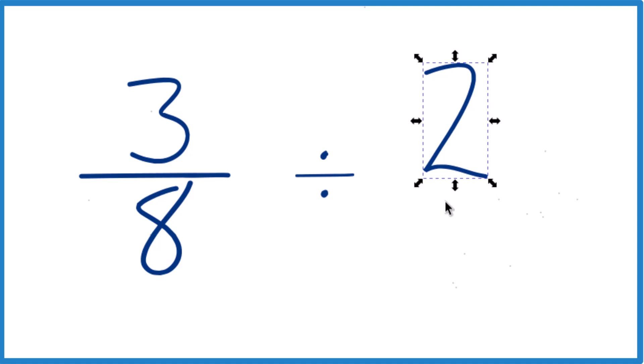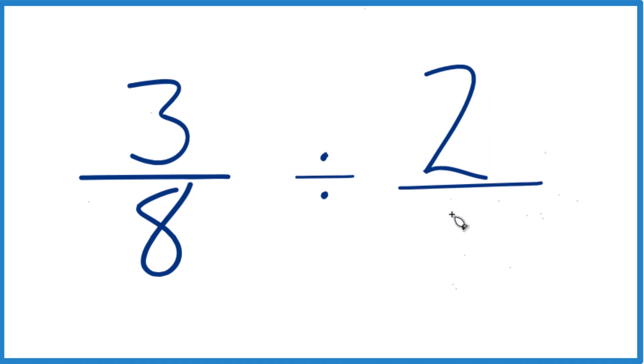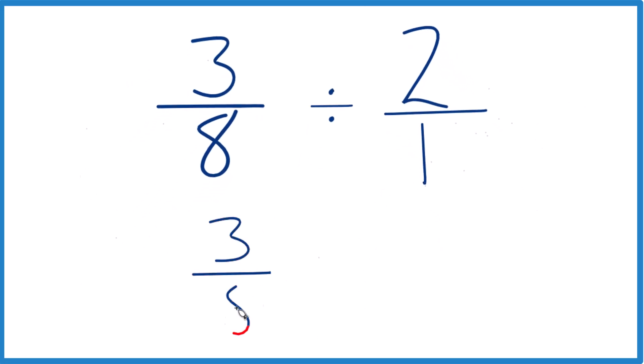Keep that in mind. Let's take the two here—instead of two, let's call this two over one. Two over one is still two; we're dividing by one, but now things line up better. We take our three-eighths, and instead of division, we're going to multiply by the reciprocal of two over one.